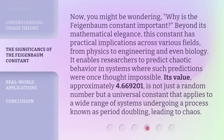Now, you might be wondering, why is the Feigenbaum Constant important? Beyond its mathematical elegance, this constant has practical implications across various fields, from physics to engineering and even biology. It enables researchers to predict chaotic behavior in systems where such predictions were once thought impossible. Its value, approximately 4.669201, is not just a random number but a universal constant that applies to a wide range of systems undergoing a process known as period doubling, leading to chaos.